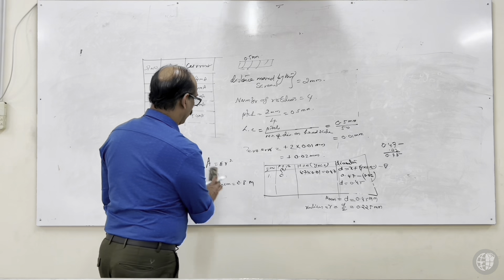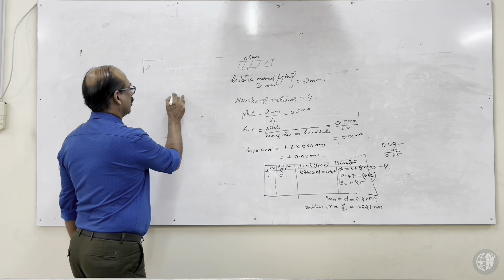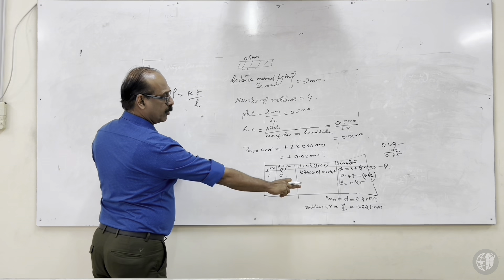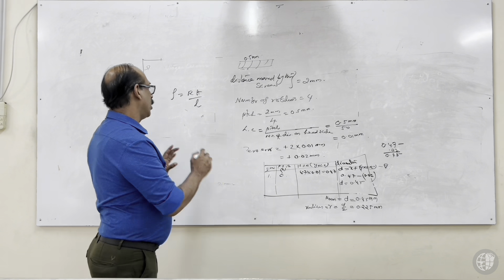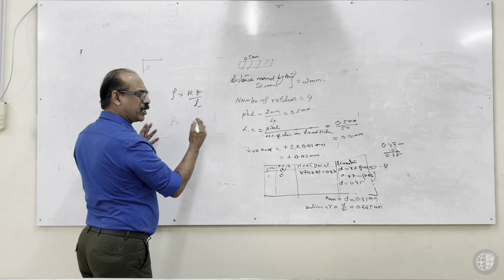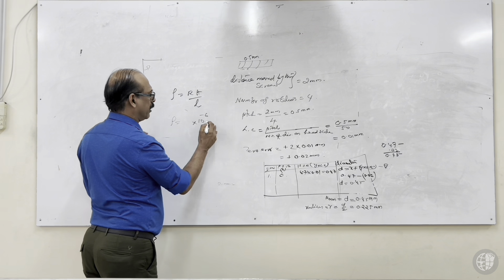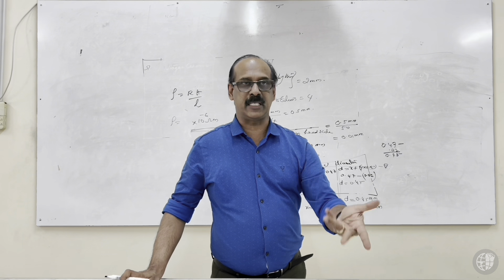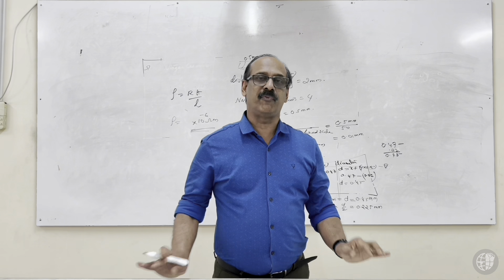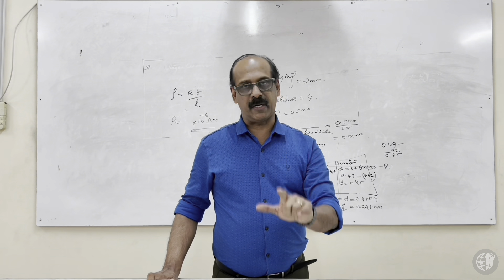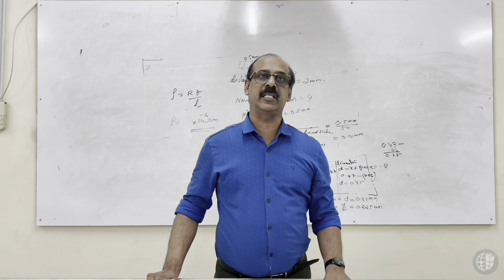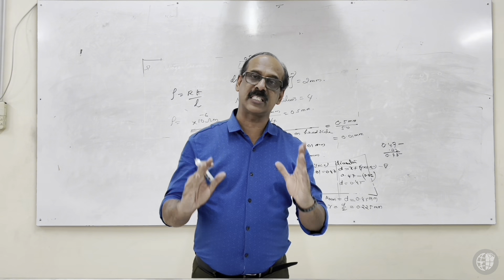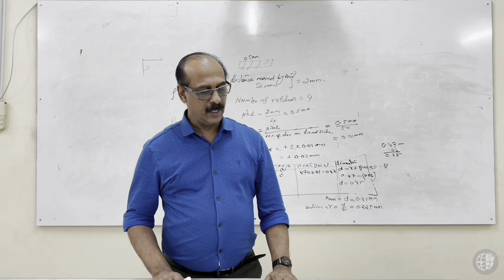Substituting in the equation: resistivity rho equals R times A divided by L. R is obtained from the Ohm's law experiment, L is 0.8 meters, and A is calculated from pi r squared. The resistivity usually comes in the order of 10 to the power minus 6 or minus 7 ohm meters. In the examination, two or three materials may be given, and we repeat this process for each material.